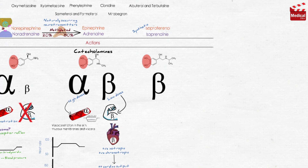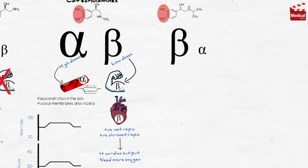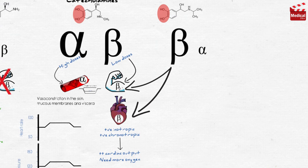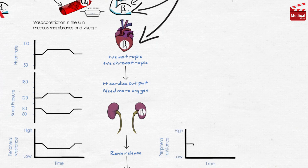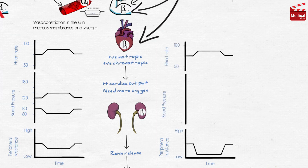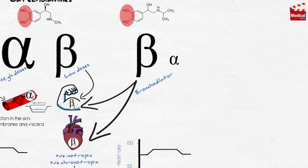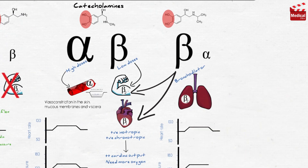Isoproterenol stimulates both beta-1 and beta-2 adrenergic receptors. It is rarely used therapeutically because of its non-selectivity, and its action on alpha receptors is insignificant. It produces intense stimulation of the heart upon acting on beta-1 receptors, increasing heart rate, contractility, and cardiac output. It also causes vasodilation of skeletal muscle blood vessels by acting on beta-2 receptors, with an insignificant effect on alpha receptors, resulting in a significant decrease in peripheral resistance. Because of its cardiac stimulatory action, it may increase systolic blood pressure slightly, and it greatly reduces diastolic blood pressure.